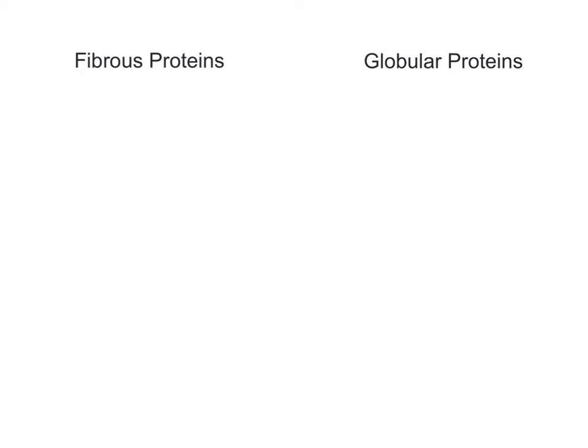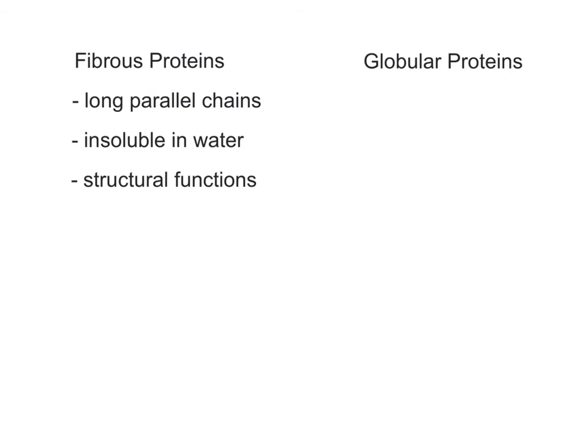In addition to these four levels of structural organization, we can also classify proteins into two broad categories based upon their overall shape: fibrous proteins and globular proteins. Fibrous proteins form long parallel chains of polypeptides that are insoluble in water and often have a structural role in the body.